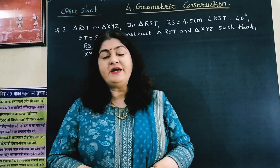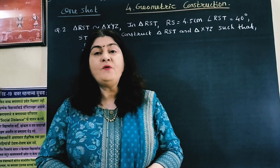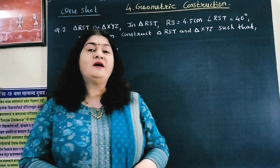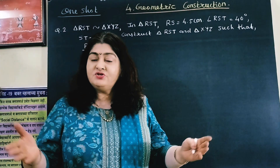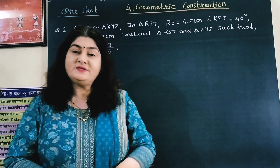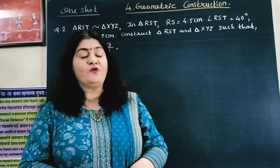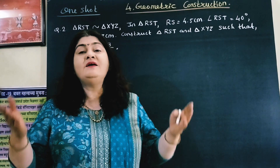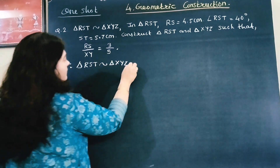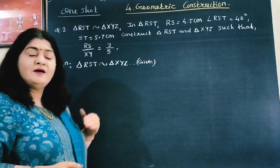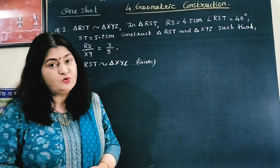Now we are on the second sum. Triangle RST is similar to triangle XYZ. In triangle RST, RS is 4.5 cm, angle RST is 40 degrees, and segment ST is 5.7 cm. We have to construct triangle RST and triangle XYZ if RS upon XY equals 3 upon 5. Since the triangles are similar, corresponding sides are in proportion: RS upon XY equals ST upon YZ equals RT upon XZ.